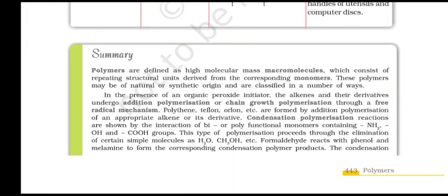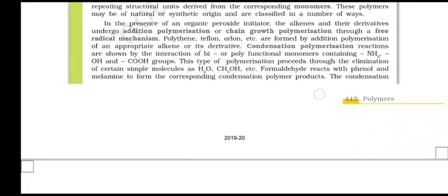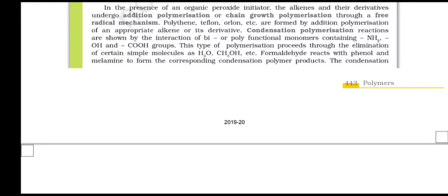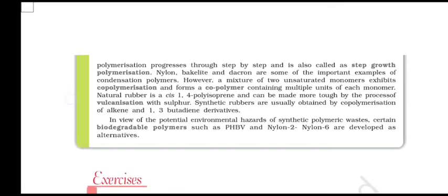Summary: polymers are defined as high molecular mass macromolecules which consist of repeating structural units derived from corresponding monomers. These polymers may be of natural or synthetic origin and are classified in a number of ways. In the presence of an organic peroxide initiator, alkenes and their derivatives undergo addition polymerization or chain growth polymerization through a free radical mechanism. Polythene, Teflon, Orlon, etc. are formed by addition polymerization of appropriate alkenes or their derivatives. Condensation polymerization reactions are shown by the interactions of bi- or poly-functional monomers containing –NH₂, –OH and –COOH groups. This type of polymerization proceeds through the elimination of small molecules like H₂O, CH₃OH, etc. Formaldehyde reacts with phenol and melamine to form the corresponding condensation polymer products. Condensation polymerization progresses step by step and is also called step growth polymerization.